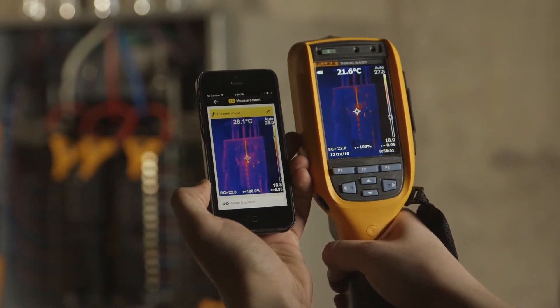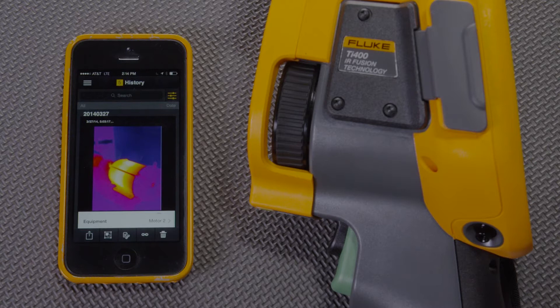We've got a thermal imager on the right, paired with the app. And if I take an image of this motor and save it, it's transferred over to the app automatically and is ready to save. This is auto record.